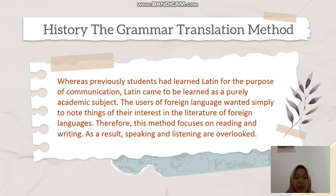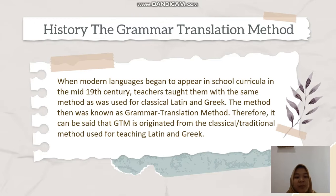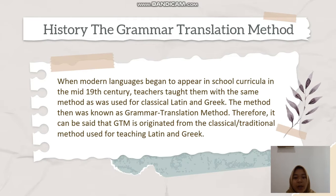The use of foreign language was simply to read their interest in the literature of a foreign language. This method focused on reading and writing; as a result, speaking and listening are overlooked. When modern languages began to appear in school curricula in the middle of the 19th century, teachers taught them with the same method as was used for classical Latin and Greek. The method was known as the grammar translation method. Therefore, it can be said that GTM originates from the classical or traditional method used for teaching Latin and Greek.